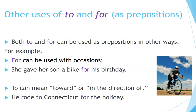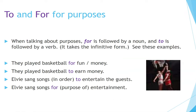Other uses of 'to' and 'for' as prepositions. Both can be used as prepositions in other ways. For example, 'for' can be used with occasions: 'She gave her son a bike for his birthday.' 'To' can mean toward or in the direction of: 'He rode to Connecticut for the holiday.' When talking about purposes, 'for' is followed by a noun and 'to' is followed by a verb. Examples: 'They played basketball for fun,' 'They played basketball for money,' 'They played basketball to earn money.'